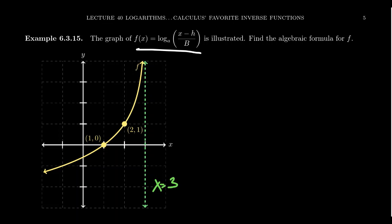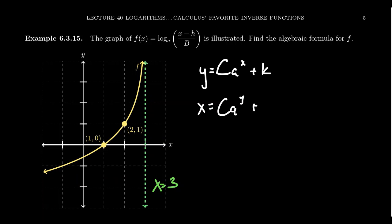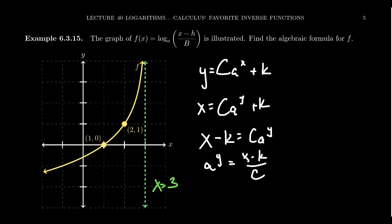That's the worst case scenario for a logarithm. In a previous video, we saw that the most general exponential function is y equals c times a to the x plus k, where c gives the vertical stretch, a is the base, and k is the vertical shift. If we compute the inverse function by swapping x and y and solving for y, we get y equals log base a of (x minus k) over c. Switching labels to h and b — since we use h for horizontal shifting and b for horizontal stretching — the most general logarithm looks like f of x equals log base a of (x minus h) over b.